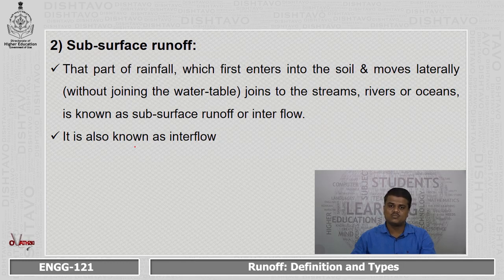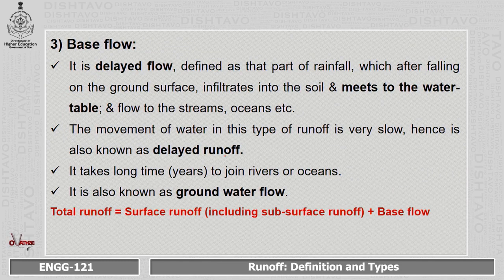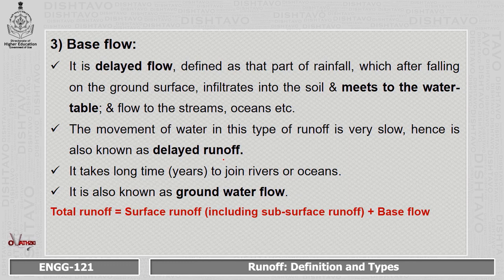The third type is base flow, also called delayed flow. It is defined as that part of rainfall which, after falling on the ground surface, infiltrates into the soil, meets the water table, and then flows to streams and oceans. The movement of water in this type of runoff is very slow, which is why it is called delayed flow. It takes a long time — sometimes years — to join rivers or streams. It is also known as groundwater flow. Finally, total runoff is the summation of surface runoff, subsurface runoff, and base flow.